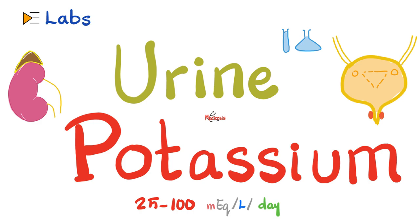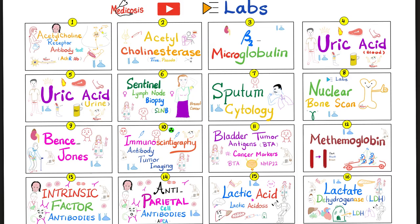What was the normal potassium in the serum? The concentration was between 3.5 and 5 milliequivalents per liter. How about the concentration of potassium in the urine? Between 25 and 100 milliequivalents per liter per day. Now, let's get started.